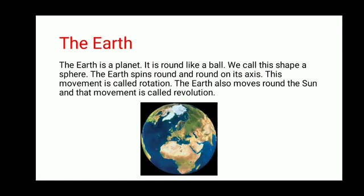Our next object of space is the Earth. The Earth is a planet. Planets are objects which move around the Sun. There are eight planets in our solar system and the Earth is the third planet. It is round like a ball — we call this shape a sphere. The Earth spins round and round on its axis, and this movement is called rotation. The Earth also moves around the Sun, and that movement is called revolution.